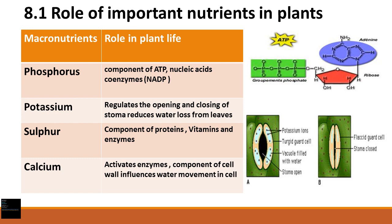Sulfur is an important component of proteins, vitamins, and enzymes. Calcium is essential for plants just as it is for our bones and teeth. It is a component of the cell wall, which gives strength to plant cells. Calcium also influences water movement in the cell and activates many enzymes.